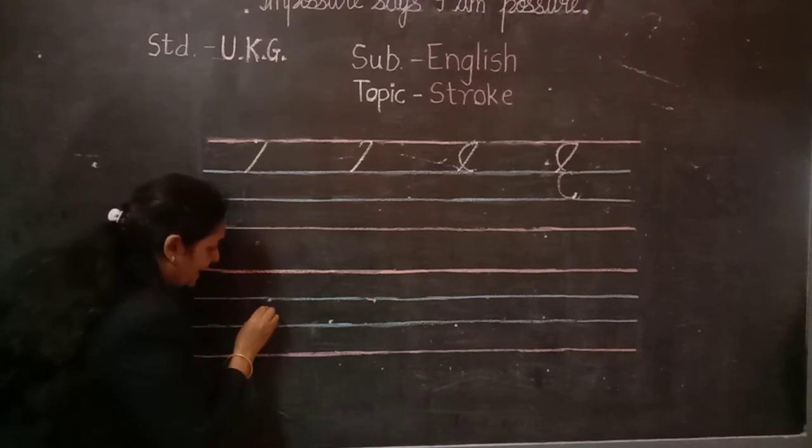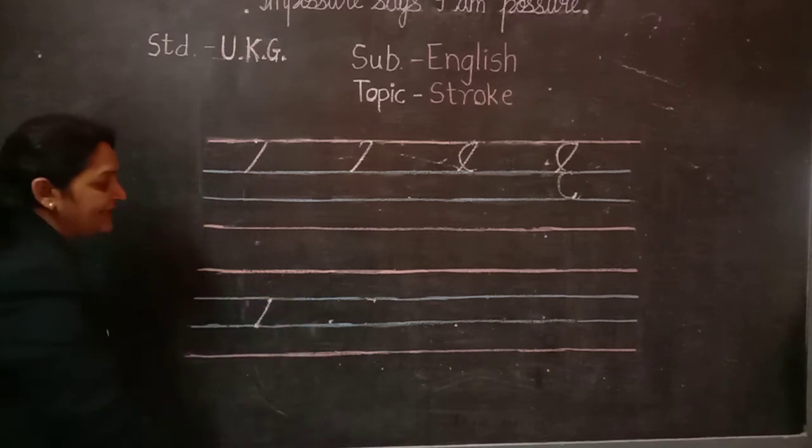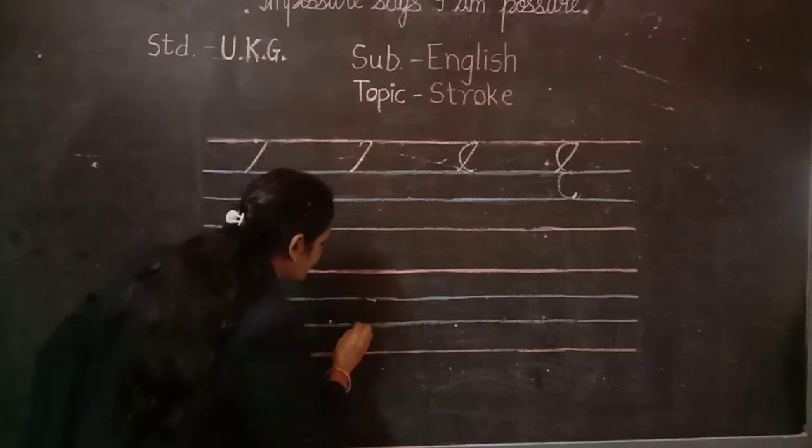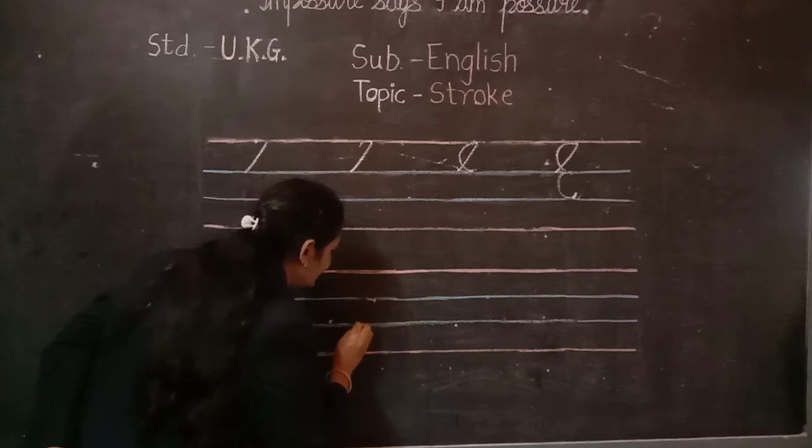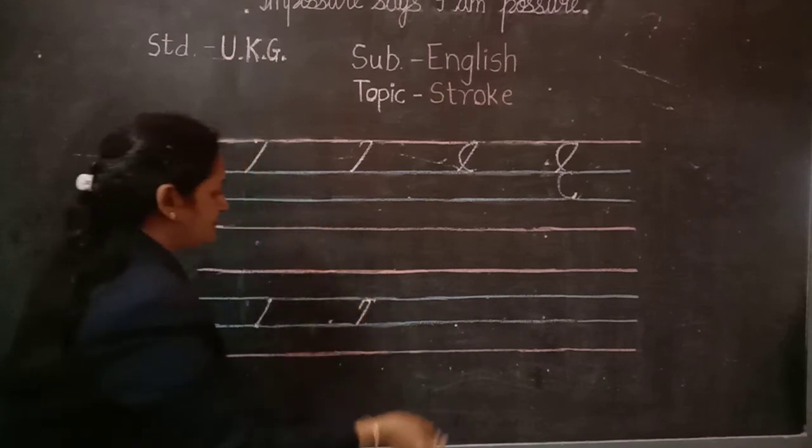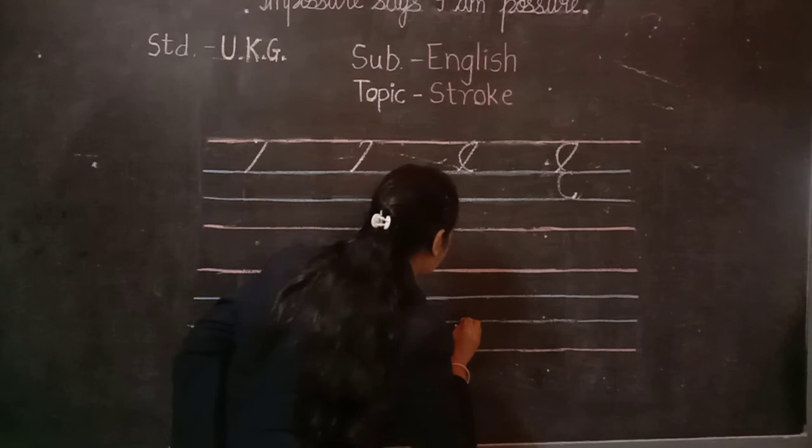Second blue line to first blue line. Slanting line. One more slanting line. Turn.